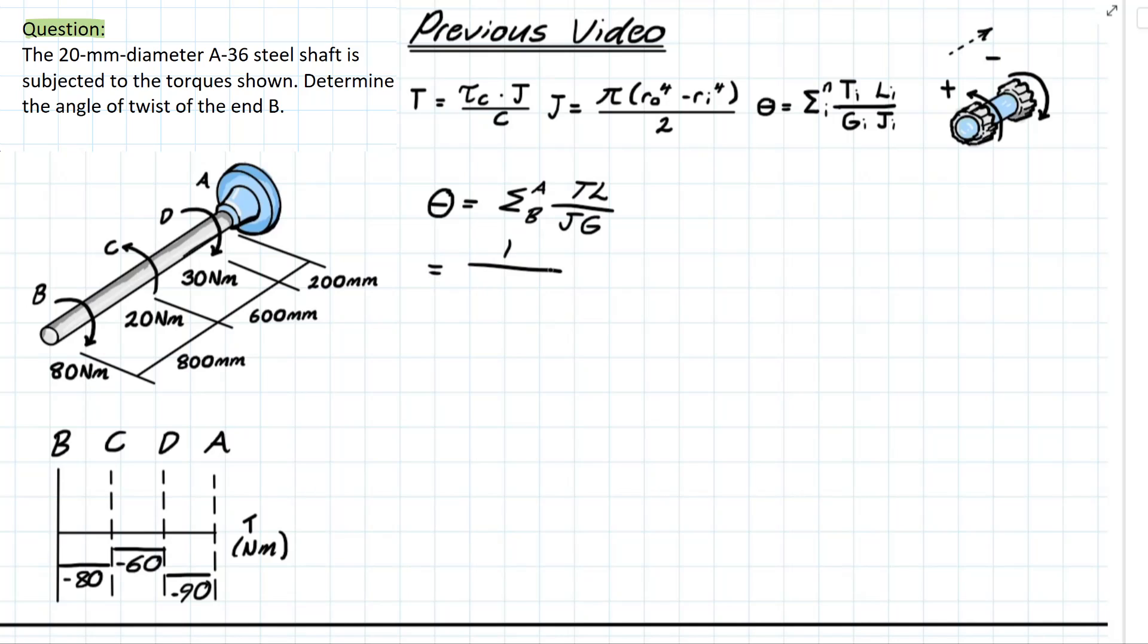Now that we know this the formula is going to look something like this. We can bring out these constants of the polar moment inertia and the shear modulus and then in brackets we can break down the individual components where we have the torque at BC plus the length at BC